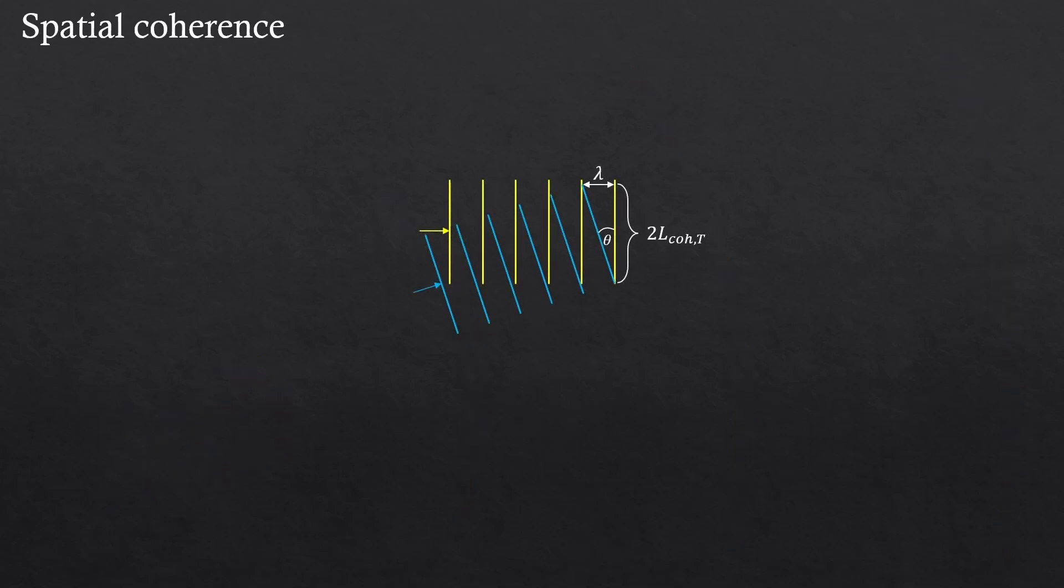Alright, so how do we actually determine this through experiment? We all learned Young's double-slit experiment, right? It's precisely the same calculation method. Tan theta is lambda over two times the coherence length. And with small angle approximation, we can write it like that, right? And this angle can also be expressed using the physical distances, d and x. So just combine the two expressions to derive the coherence length.